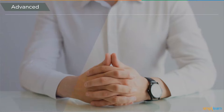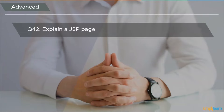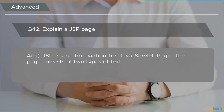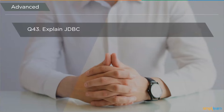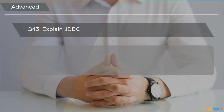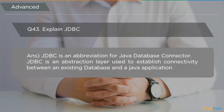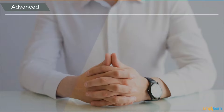The next question is: explain JSP page. JSP stands for Java Servlet Page. It consists of two types of text: static data and Java Servlet Page elements. The following question asks to explain JDBC. JDBC stands for Java Database Connector — an abstract layer used to establish connectivity between any existing database and a Java application.